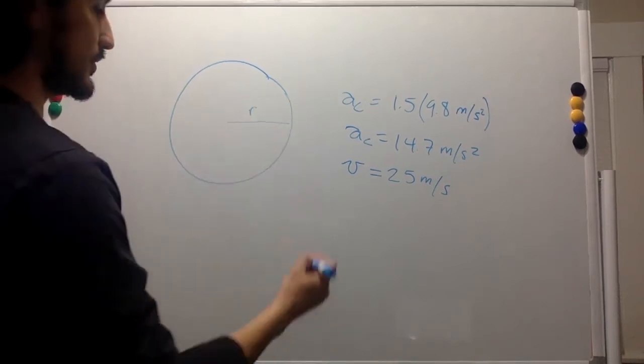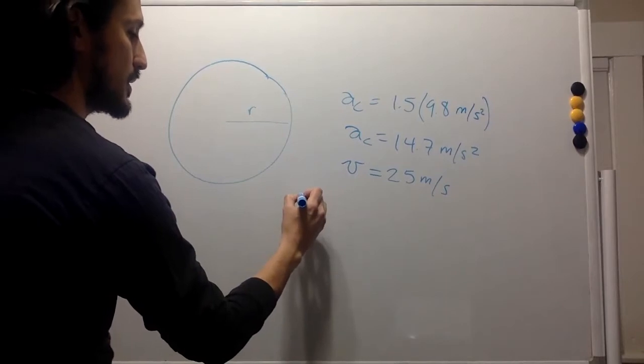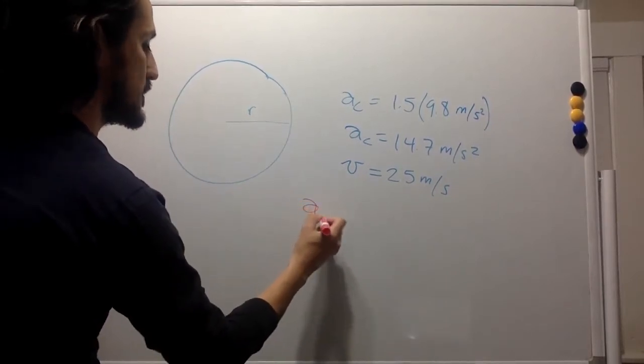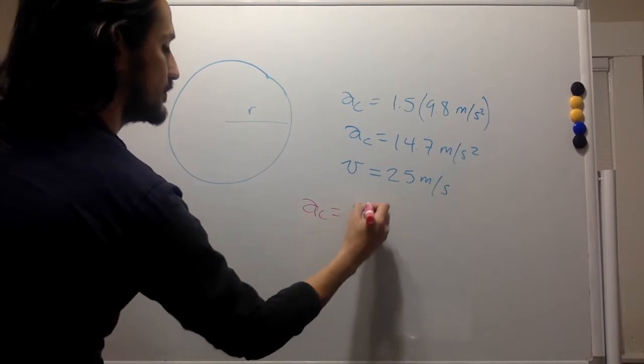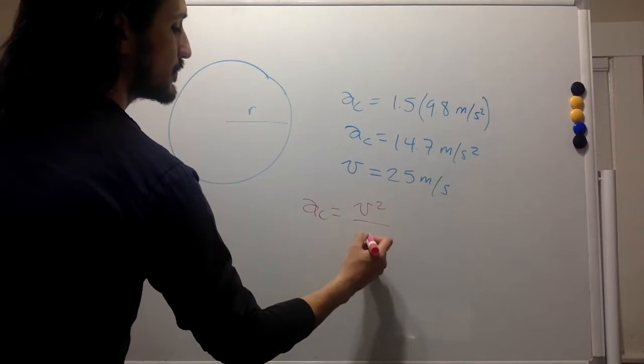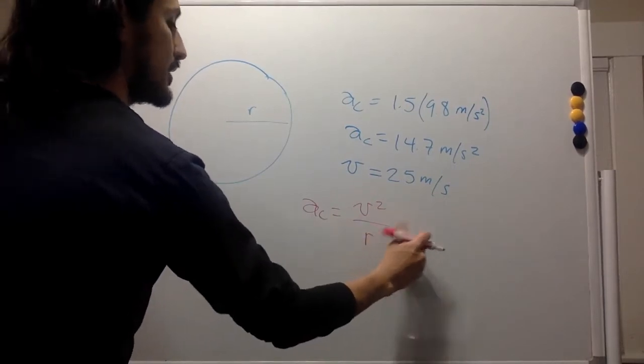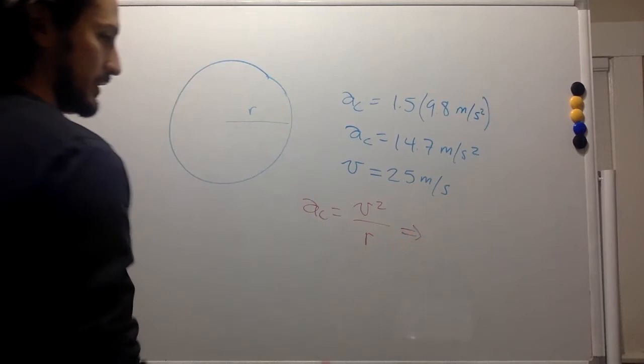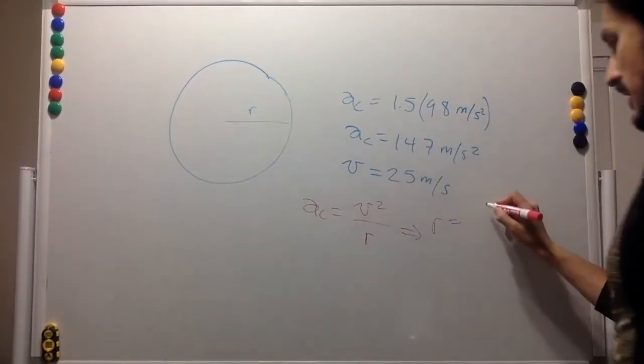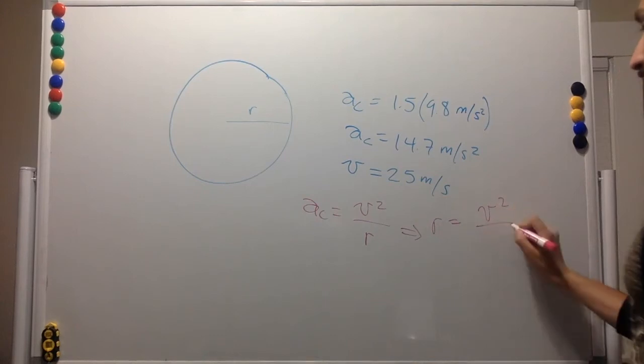I know that the centripetal acceleration is the magnitude of velocity squared divided by the radius. This implies that the radius equals velocity squared divided by centripetal acceleration.